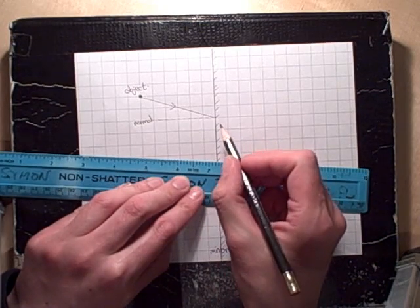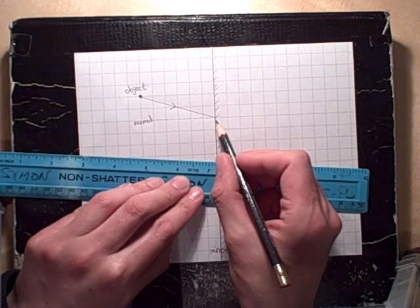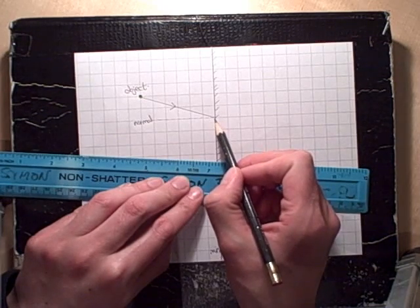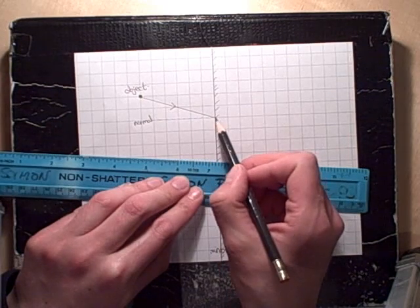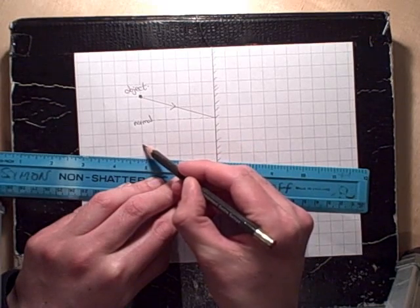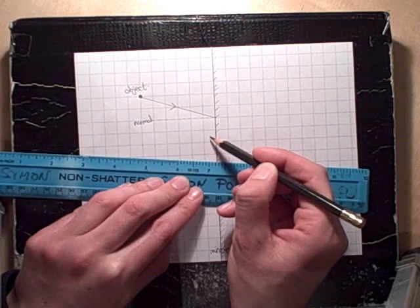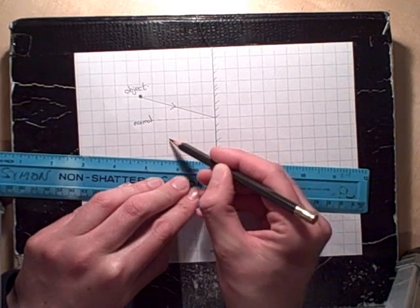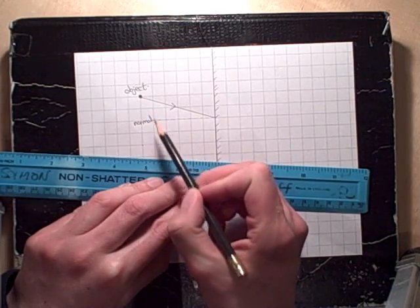Now, I need to draw in a reflected ray, which is reflected with the same angle as the incident ray had. The easiest way to do this is to make sure that it comes back through this point here, and then when it's travelled two squares down, it will have travelled one, two, three, four, five, six squares across, which is exactly what the incident ray did.